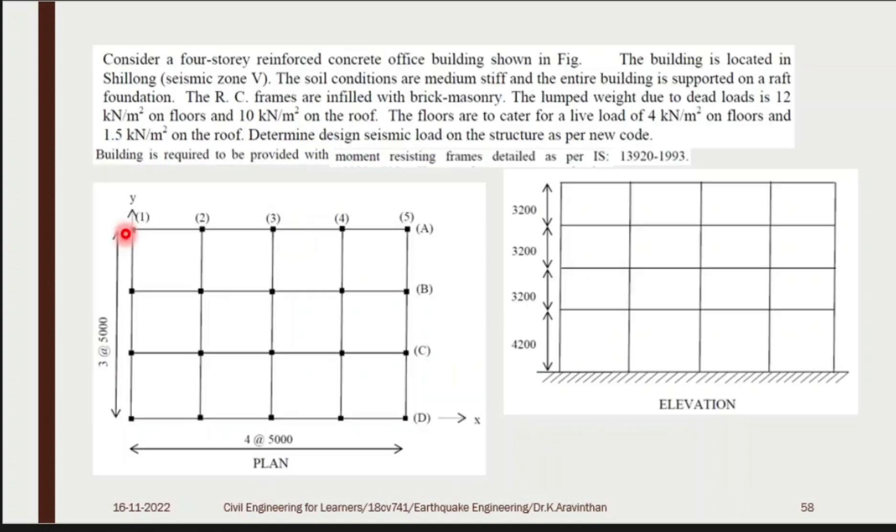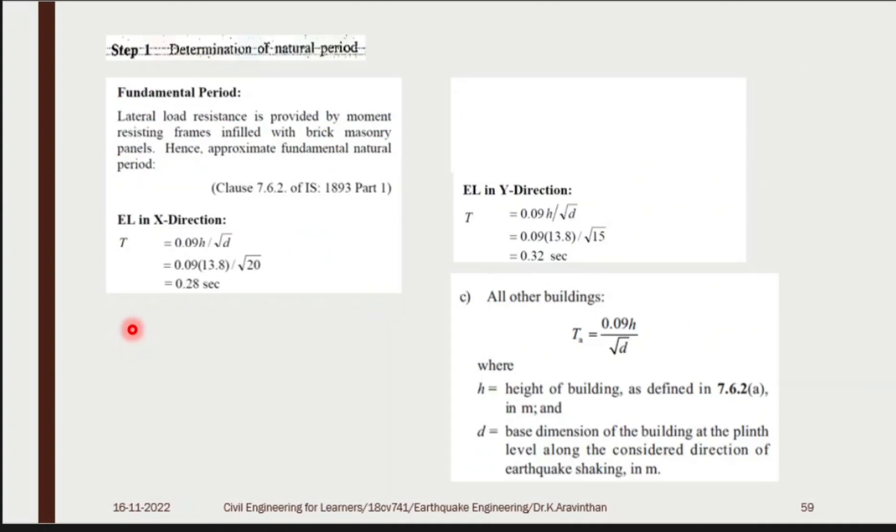So you can find for both: fundamental period for x direction and fundamental period for y direction. If your dimensions are same, you can use only one. If your dimensions are unequal, you can find both. T equal to 0.09 h by root d. Now, this is for x direction: 0.09 times 13.8 by root 20 equals 0.28 seconds. Now, for y direction, 3 into 5 is 15. So instead of 20, you substitute root 15, which gives 0.32 seconds. Now, first step is over.